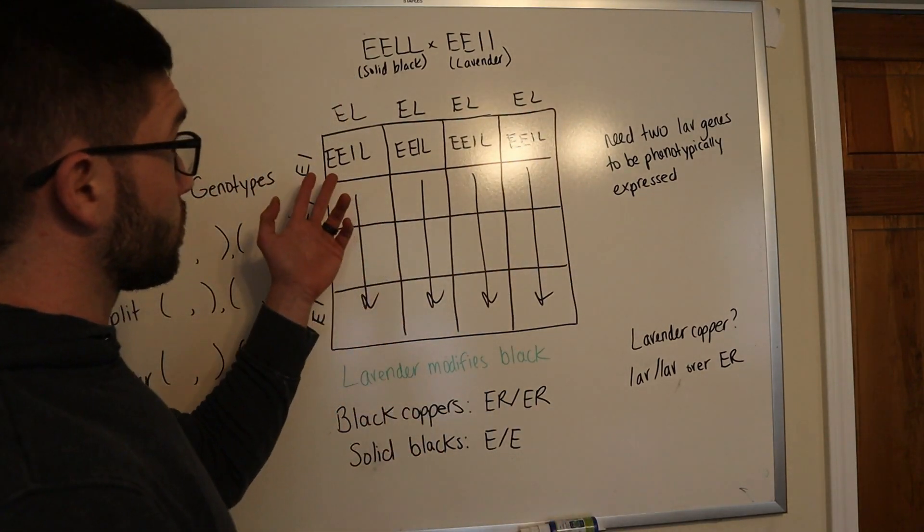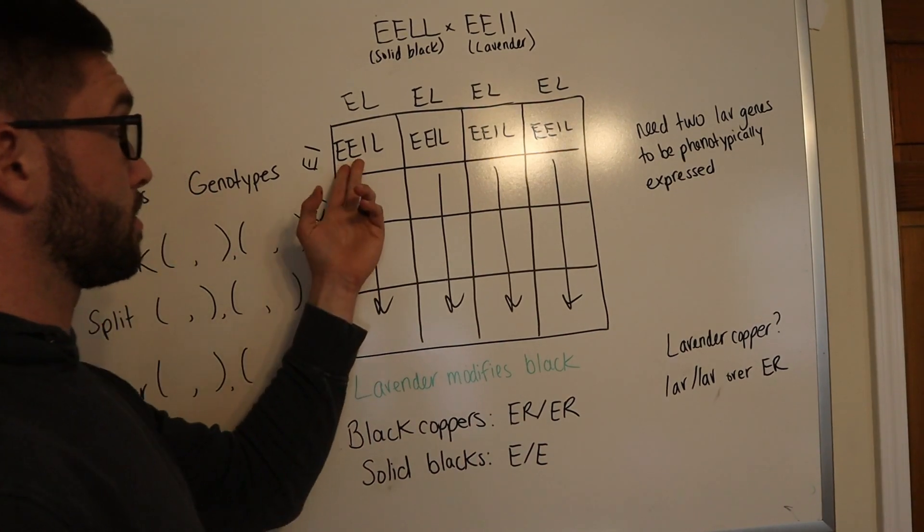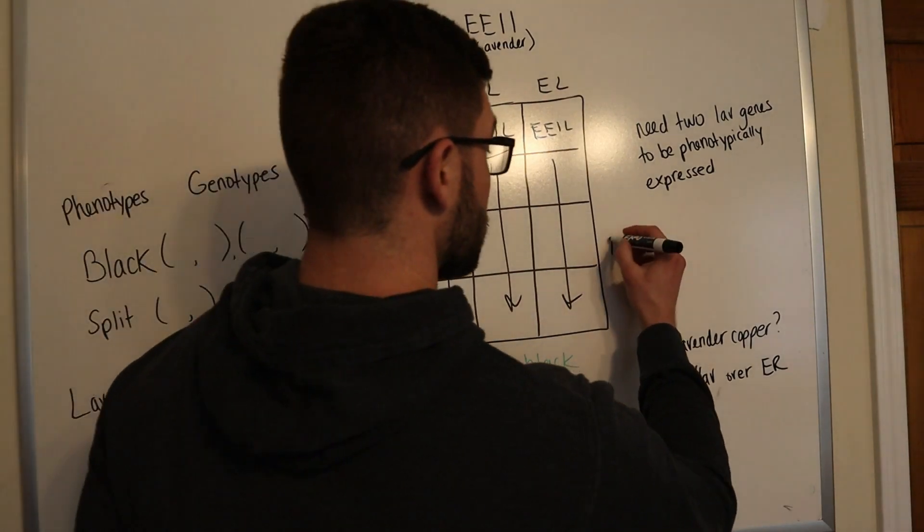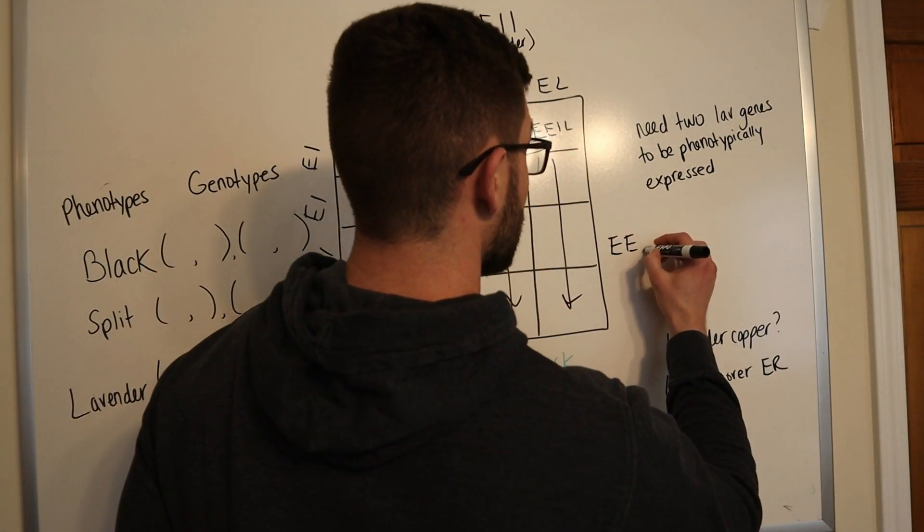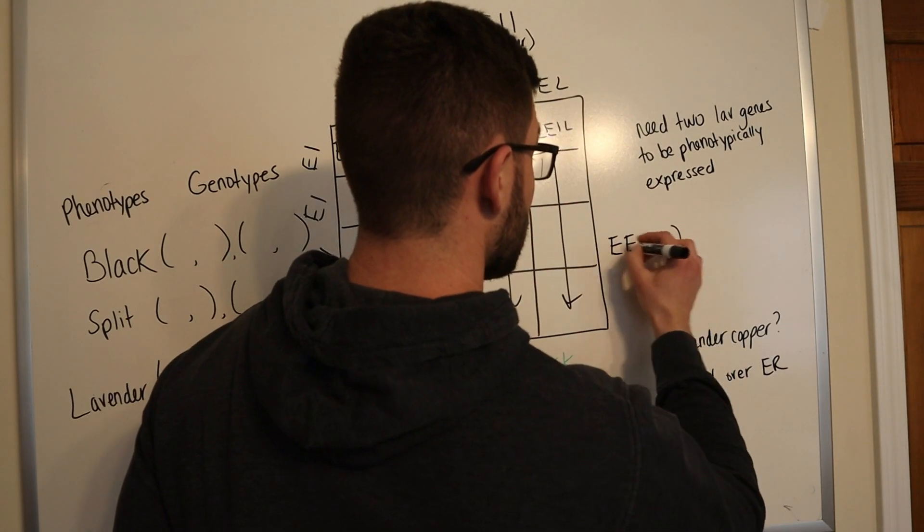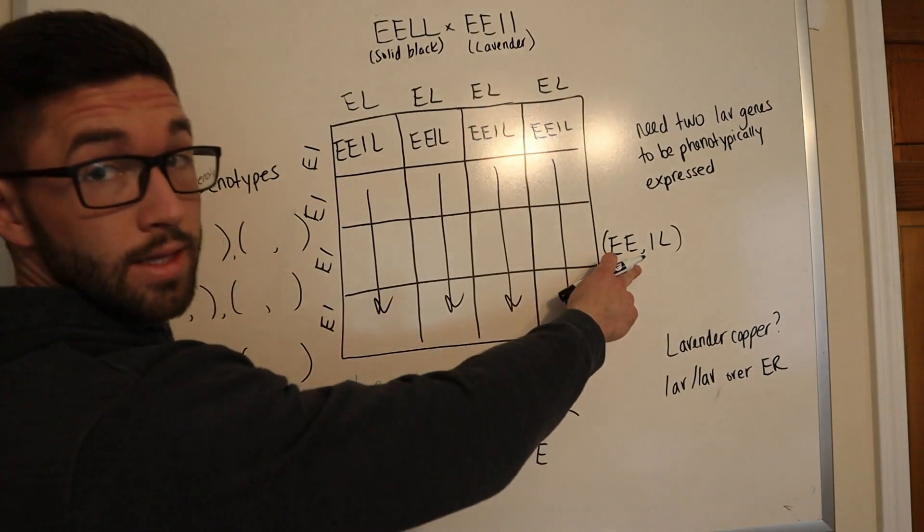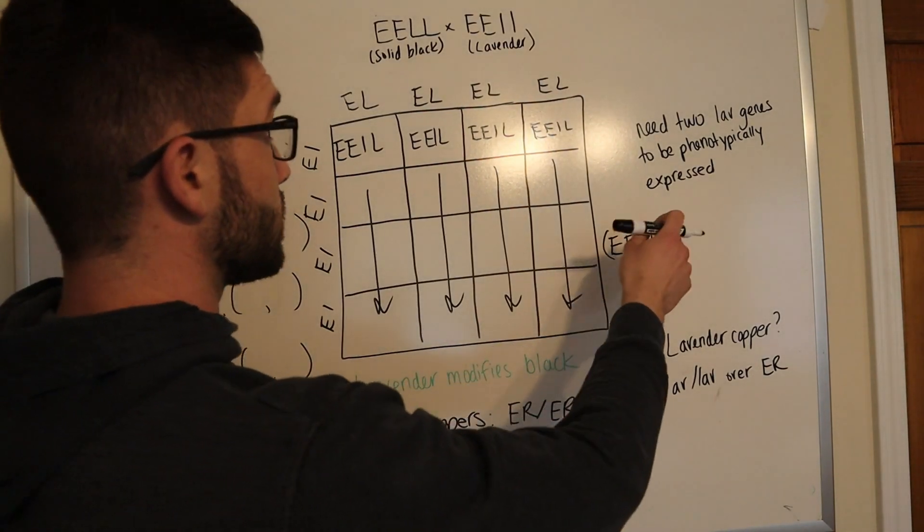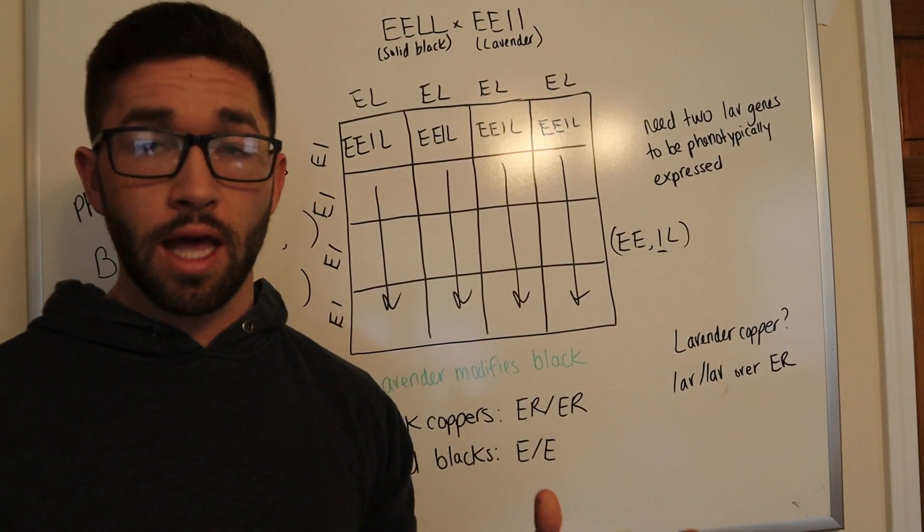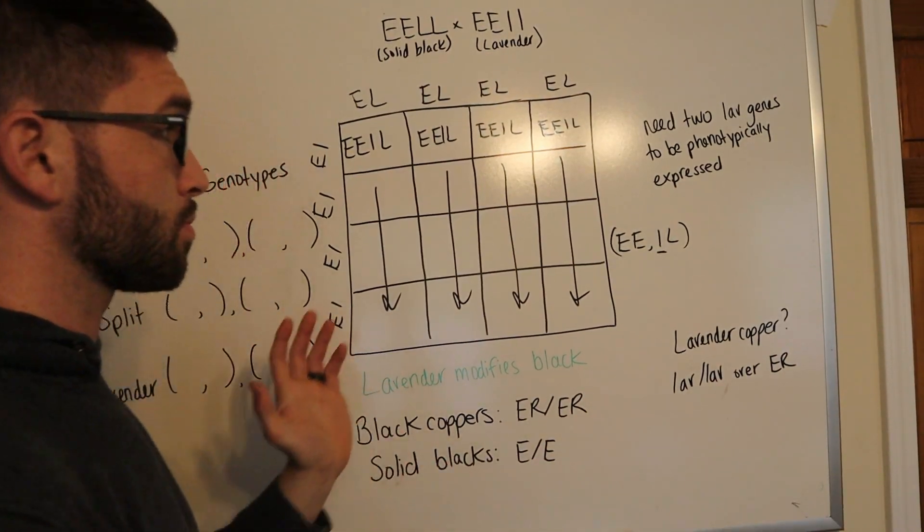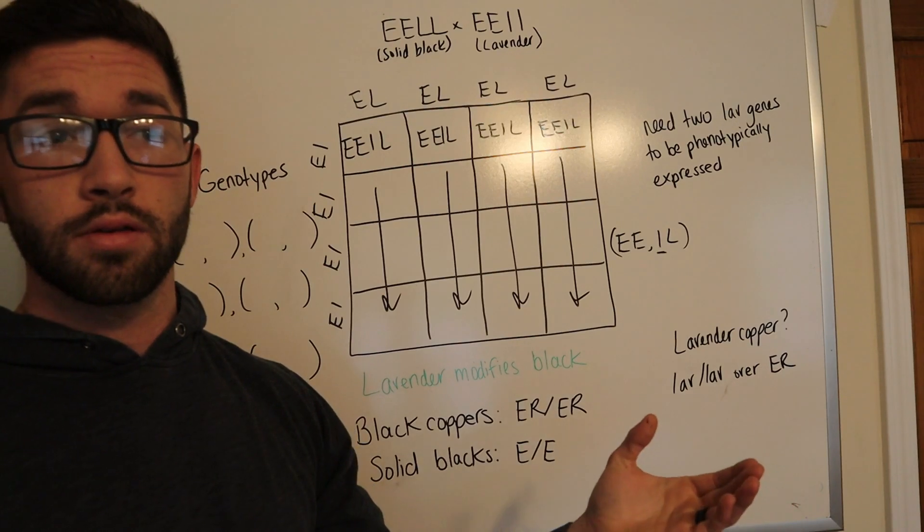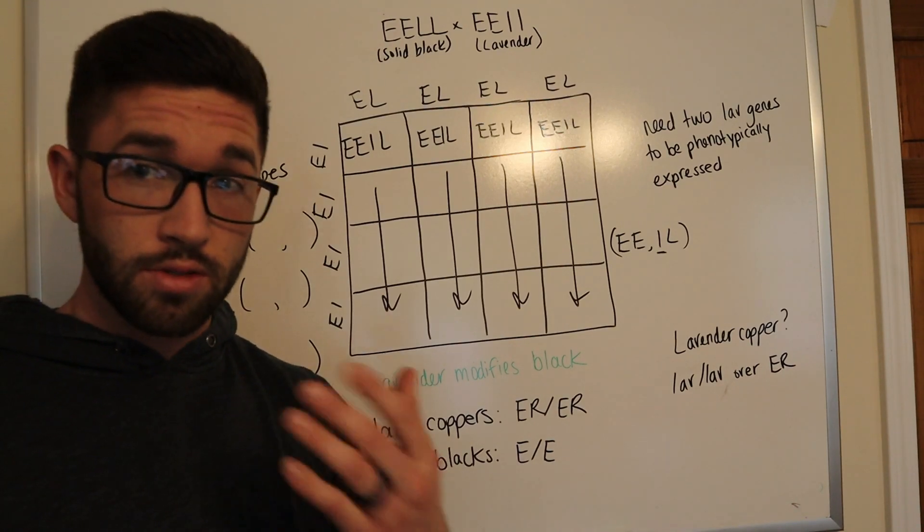And so what I'm left with is a genotype of this in every single box. So your offspring is going to be 100% E, E, and then we'll do small L, big L. And that is your final genotype of every single cross. And you may be asking yourself, what is this? When you mix a solid black bird and a lavender bird, all of the offspring come out black. And that's because you need two lavender genes to actually see the lavender be expressed phenotypically in the bird.